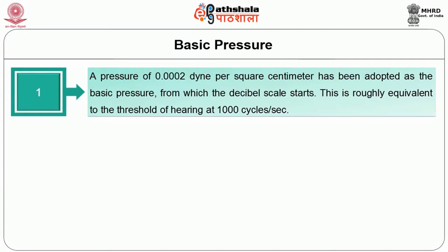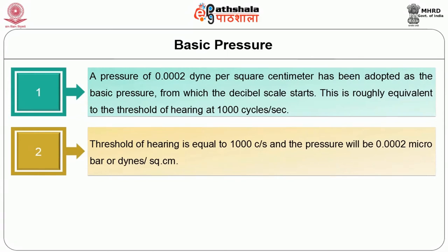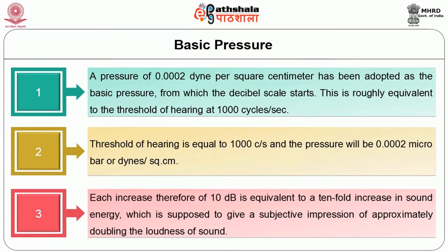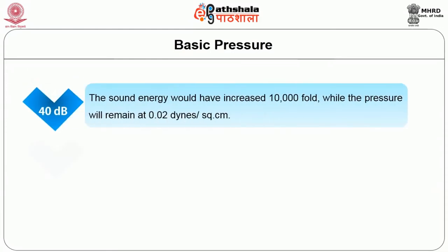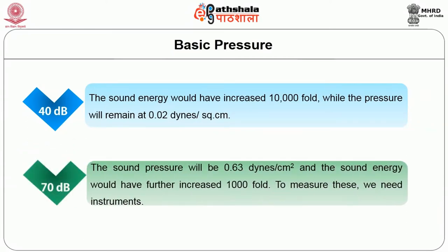The threshold of hearing is equal to 1000 cycles per second and the pressure will be 0.0002 micro bar or dynes per square centimeter. An increase of 10 dB is equivalent to a 10-fold increase in sound energy, which is supposed to give a subjective impression of approximately doubling the loudness of sound. At 40 dB — that is, sound level in a private residence — the sound energy would be increased 10,000 fold while the pressure will remain at 0.02 dynes per square centimeter. But at 70 dB, which is about the level found in a typing area, the sound pressure will be 0.63 dynes per centimeter square and the sound energy would have further increased 1000 fold.